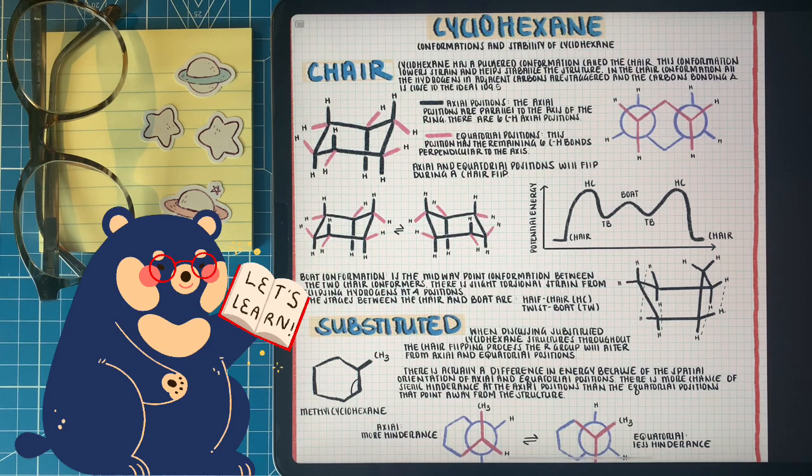When comparing both of the chair stages, this is what we call as a chair flip. The axial and equatorial positions will flip in between both of the chair states. Now, when just analyzing cyclohexane and all we have is hydrogens on the six carbons, there is not a lot of difference between the two chair conformations.